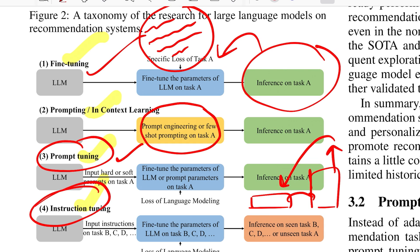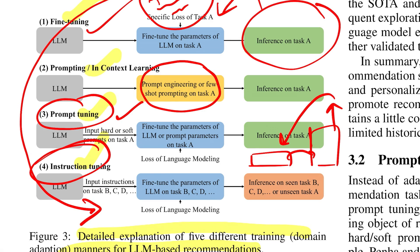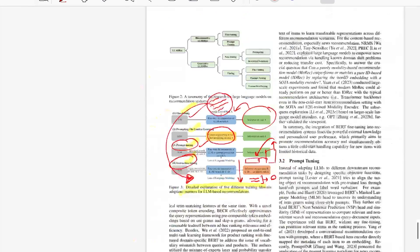The final training method is instruction tuning, which follows the same approach as fine-tuning but with different instructions for different tasks. You train one model that understands many tasks, and once the model is trained, you can prompt answers out by giving a relevant instruction. The model is expected to generalize to unseen tasks as well. That's the idea of instruction fine-tuning.